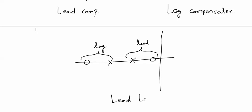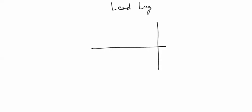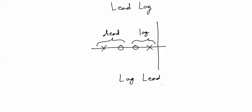For the lag-lead compensator, it is just the reverse: we have the characteristics of lag compensator first — pole near imaginary axis, then zero — and then lead compensator characteristics — zero first, then pole. Basically we have two types of compensators and by joining them we make two more types. If we study lead and lag compensators, we can easily understand lead-lag and lag-lead compensators.